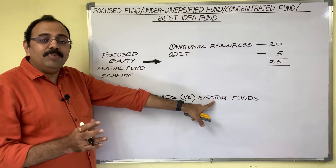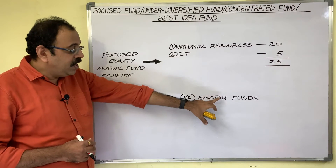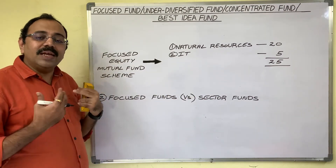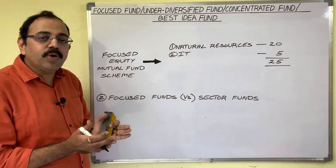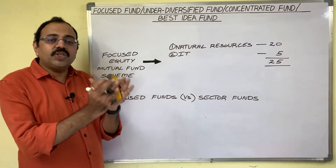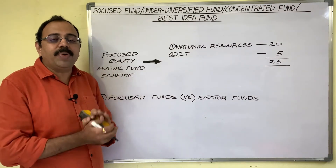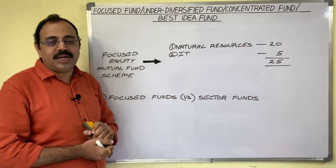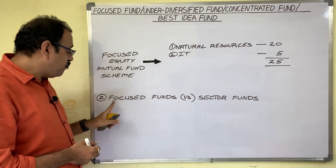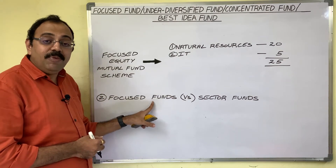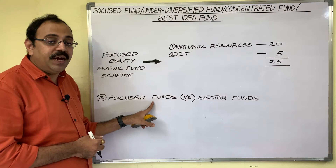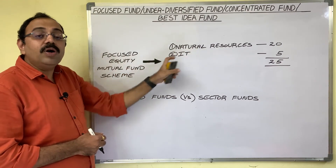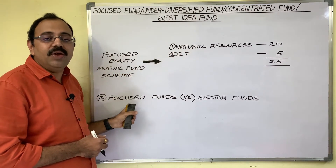The second point is: don't confuse focused funds with sector funds. In a sector fund, the fund manager invests the maximum portion of corpus in stocks of companies belonging to one particular sector. But in the case of focused funds, investment can be spread across a maximum of three sectors, thus giving some diversification benefits to investors.